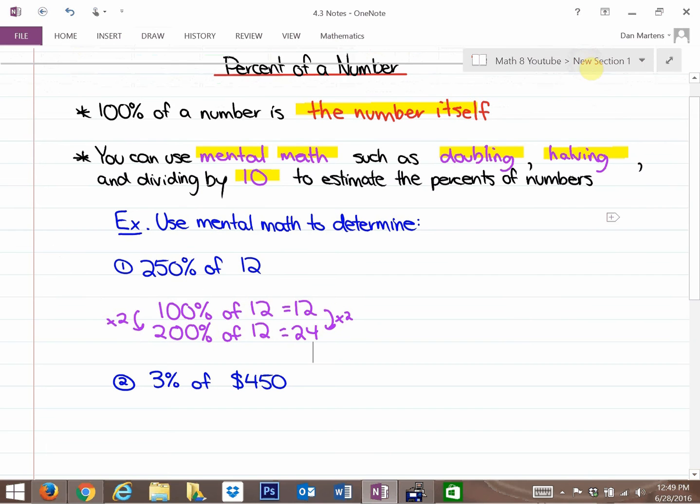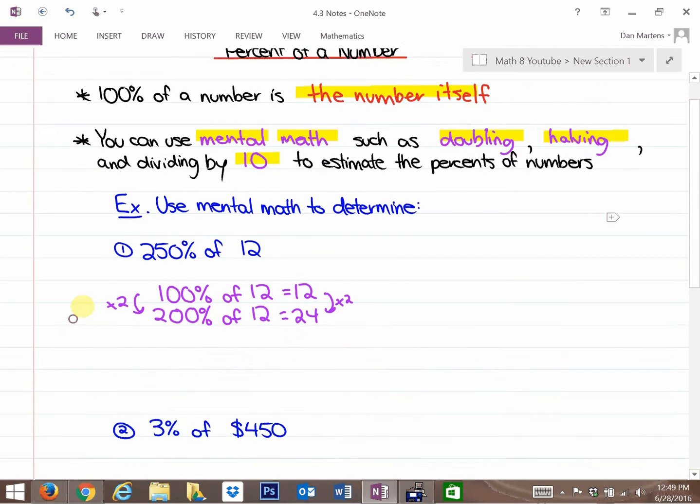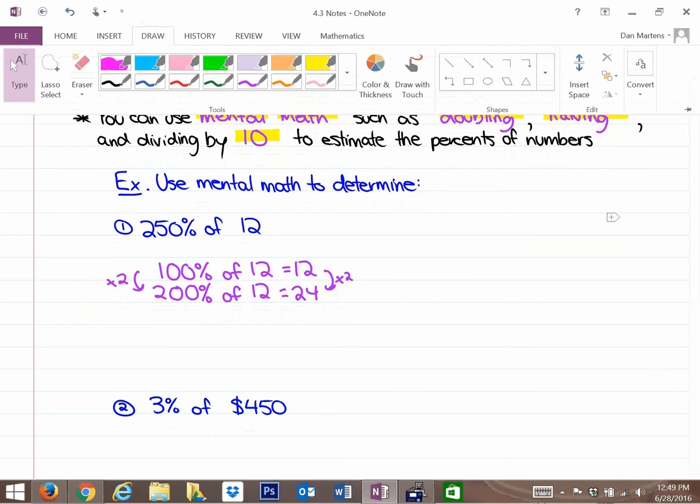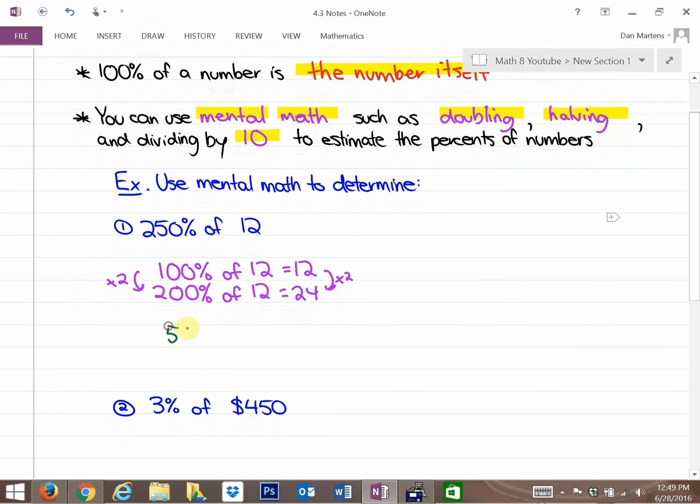Some of you have your own techniques to doing this, and you can do it any alternative way that you want to, but you might notice where I'm going with this. If I asked you what 50% of 12 is, you'd say that's half of 12. 50% of 12 is 6. But do you notice that I have 200% of 12, and I also have 50% of 12? If I combine those, would I not have 250%? So I should know that 250% of 12 is going to be 24 plus 6, which is going to be 30.